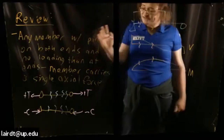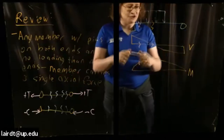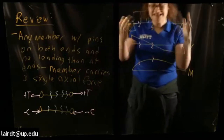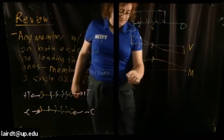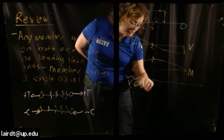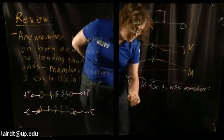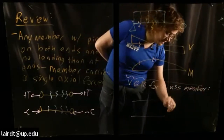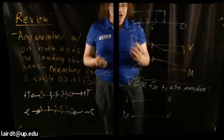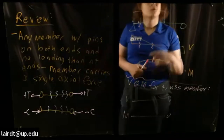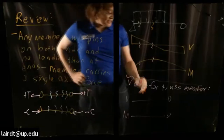What is special about trusses is that because they are supported by pins at both ends and have no loads applied between the ends of the elements, they will have a single axial force. So the shear and moment diagram for a truss element — V and M — would simply be horizontal lines at zero. A truss member will have only axial force, and therefore no shear or moment within it anywhere along its section.